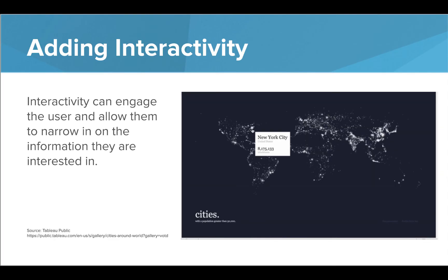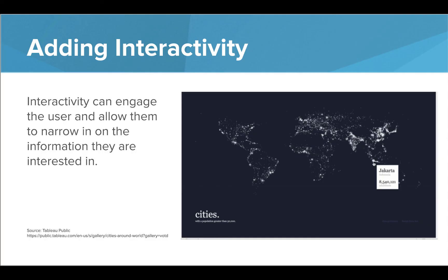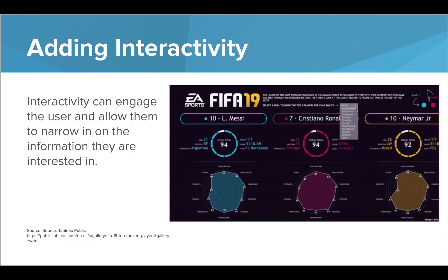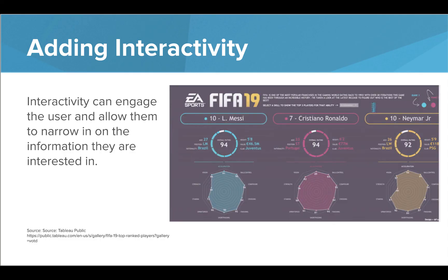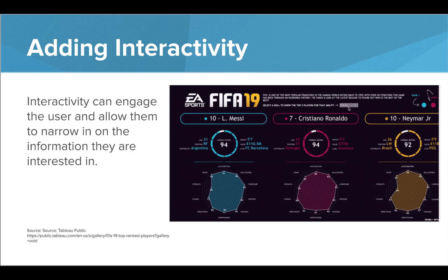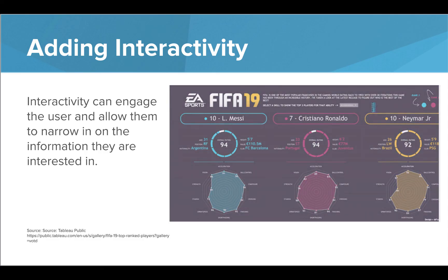When we add interactivity, it adds even more to the visualization. It can allow the user to narrow in on the information they want to know. This interactive lets you hover over each city and it will display the population for that city. Here you can see the top three overall players, or you can choose a certain skill like ball control and see the top three players in that category alone. This interactivity can engage the user and allow them to focus on the specific information they want.